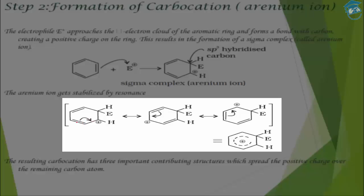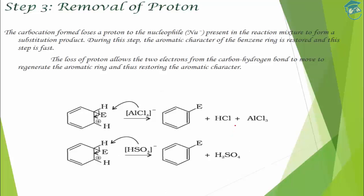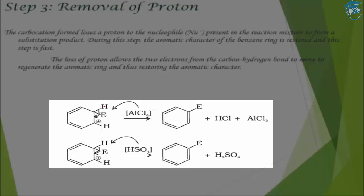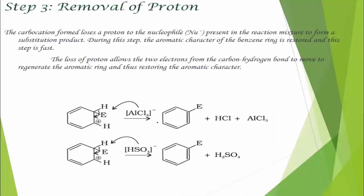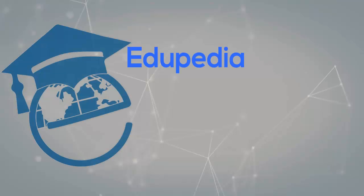The positive charge on the sigma complex is stabilized by resonance — the double bonds shift so the plus charge is delocalized around the ring, forming what is known as the arenium ion. Because of this resonance stabilization, the reaction proceeds forward rather than reverting. Finally, in the last step, AlCl₄⁻ removes the hydrogen, the bond shifts to restore the double bond, and aromaticity is restored.